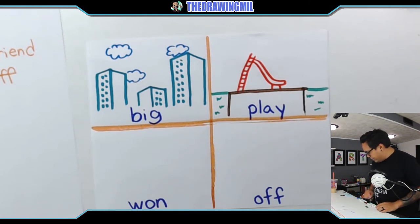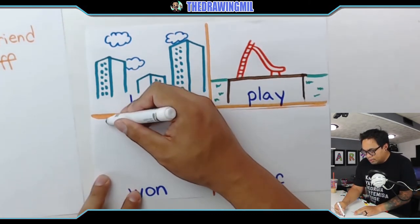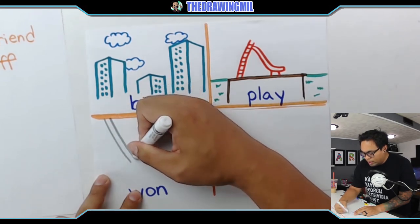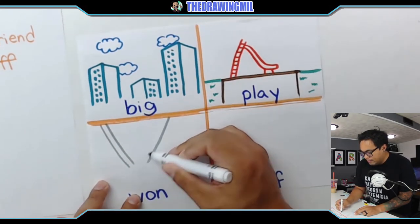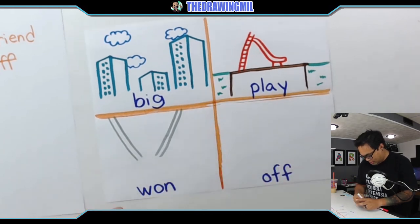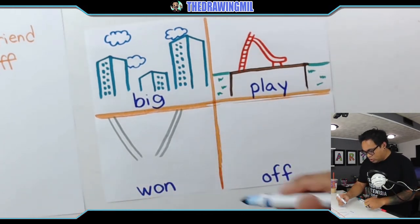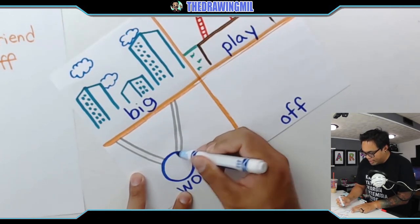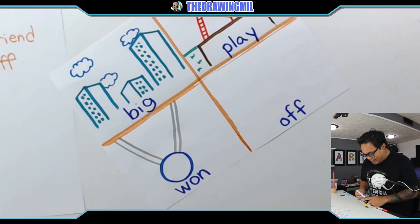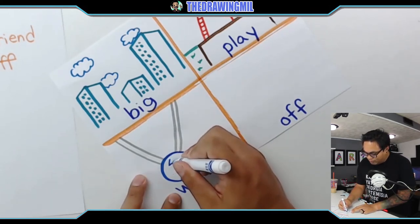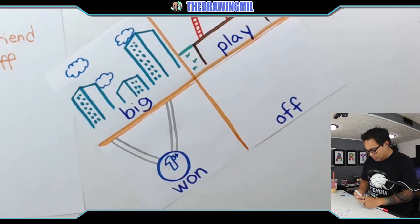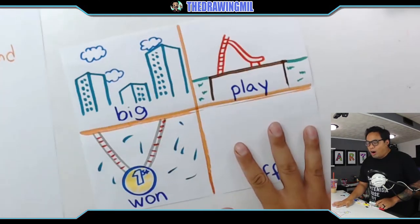For the next word I'm going to draw "one". I'm just going to create two lines going this way and two lines going this way, and then attached to this I'm going to draw a medal that says number one or first place. And then I will color it yellow.